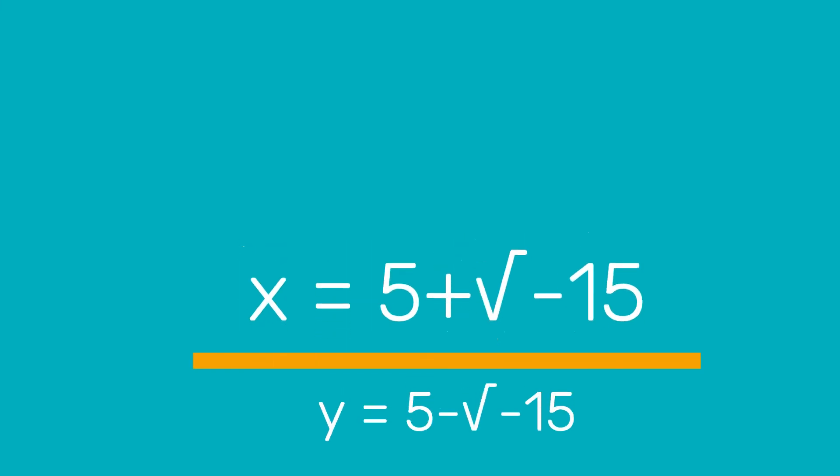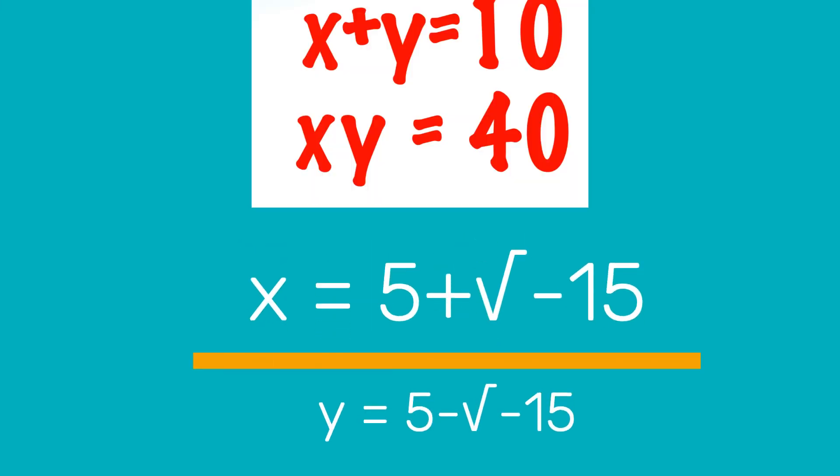And the last one is the popular problem was solved by Cardin with the solution 5 plus square root of minus 15, and 5 minus square root minus 15. But he discarded saying that these numbers are useless.